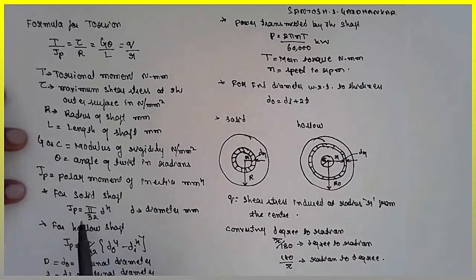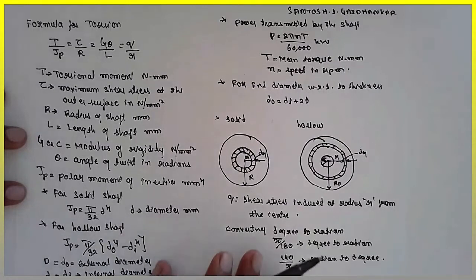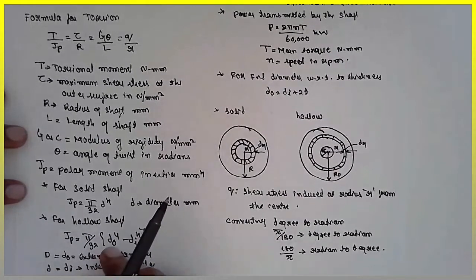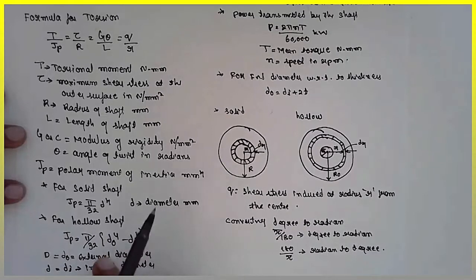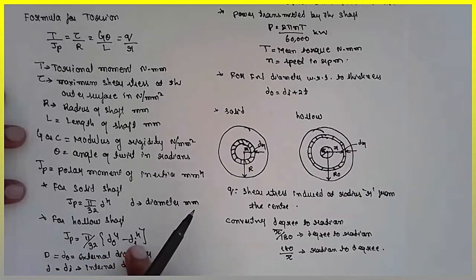JP, the polar moment of inertia, has to express in terms of mm raised to 4. For solid shaft, polar moment of inertia will be pi divided by 32 d raised to 4, where d is the diameter. For hollow shaft, JP is equal to pi by 32 into D raised to 4 minus d raised to 4, inner diameter and outer diameter.